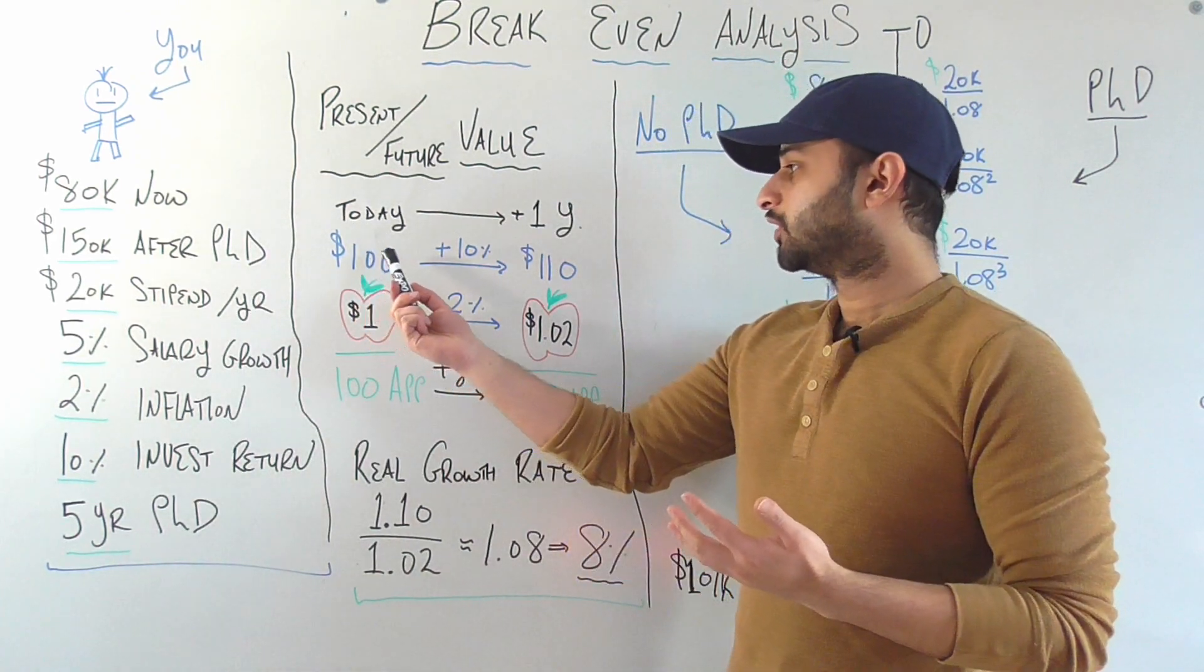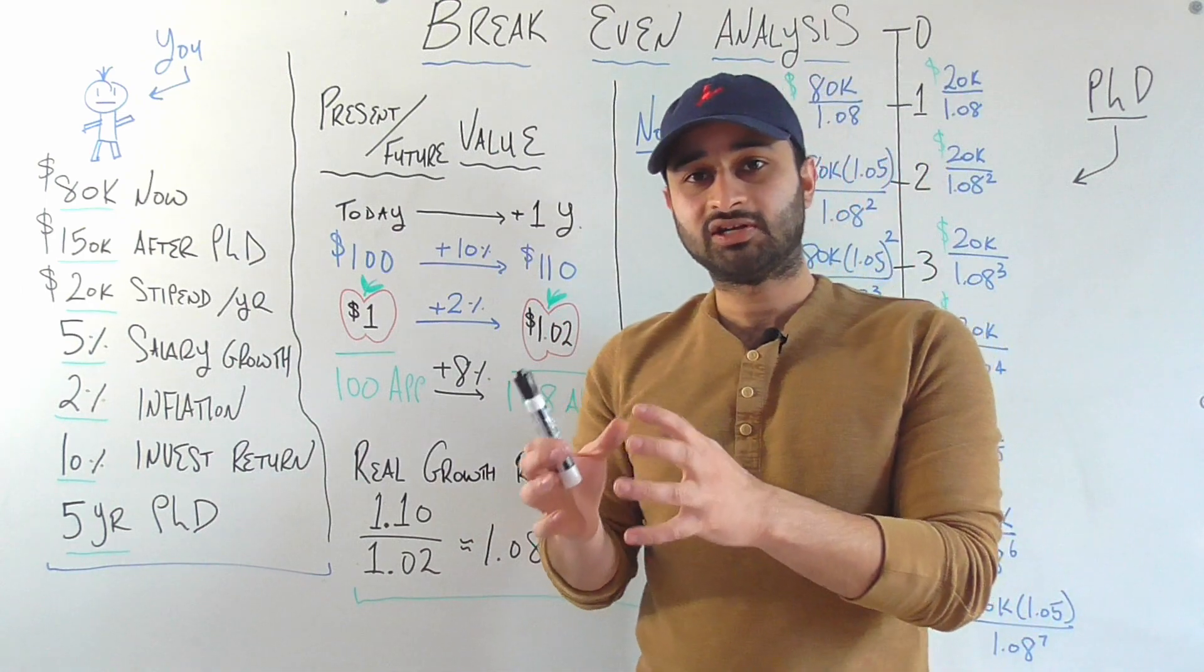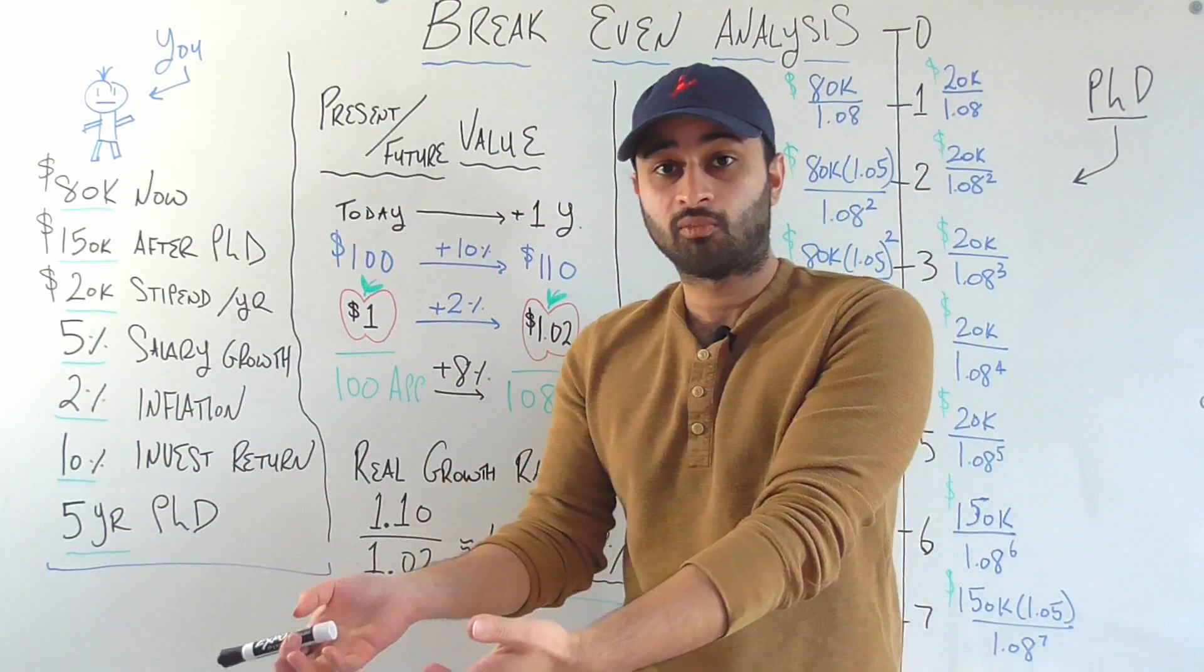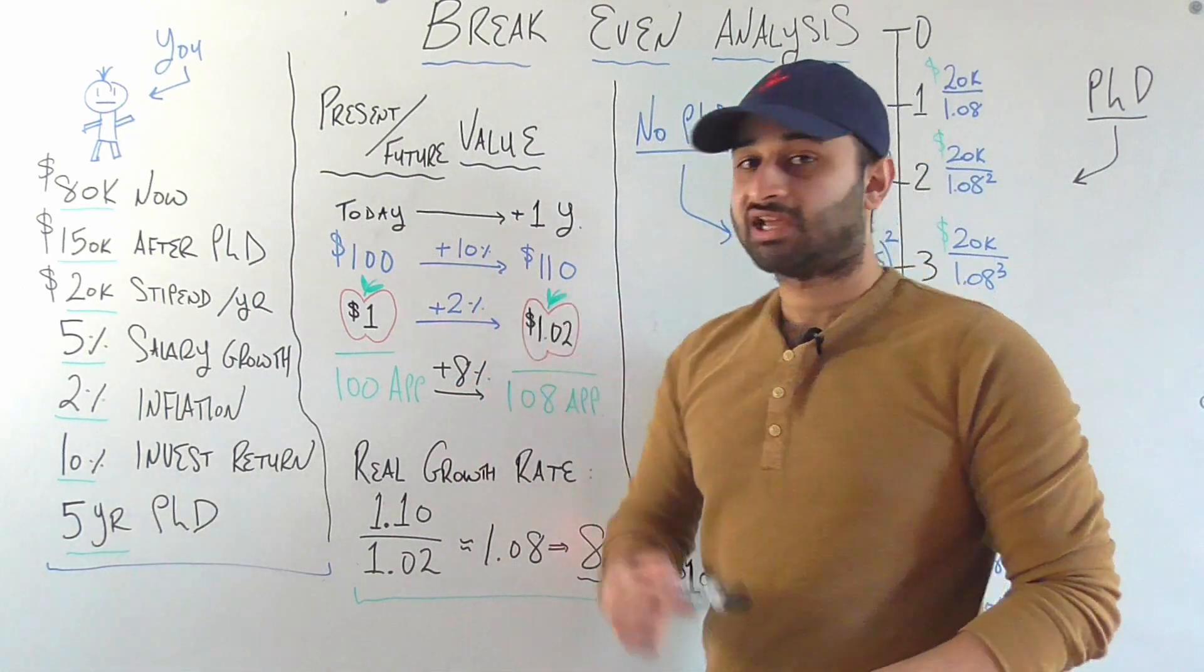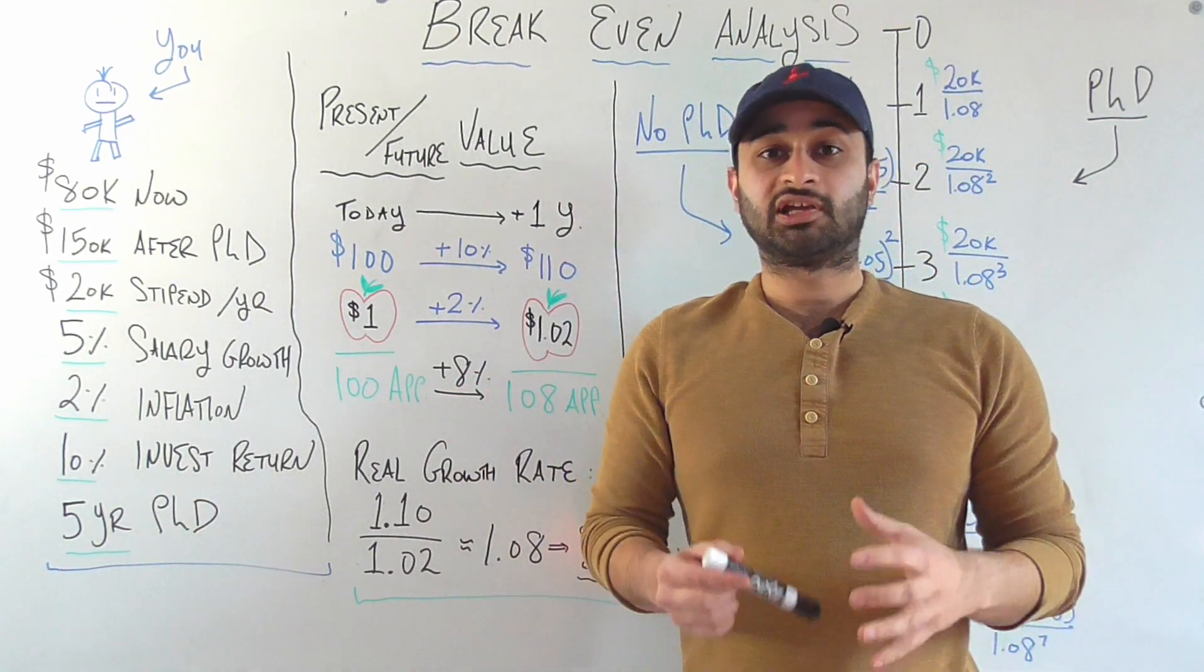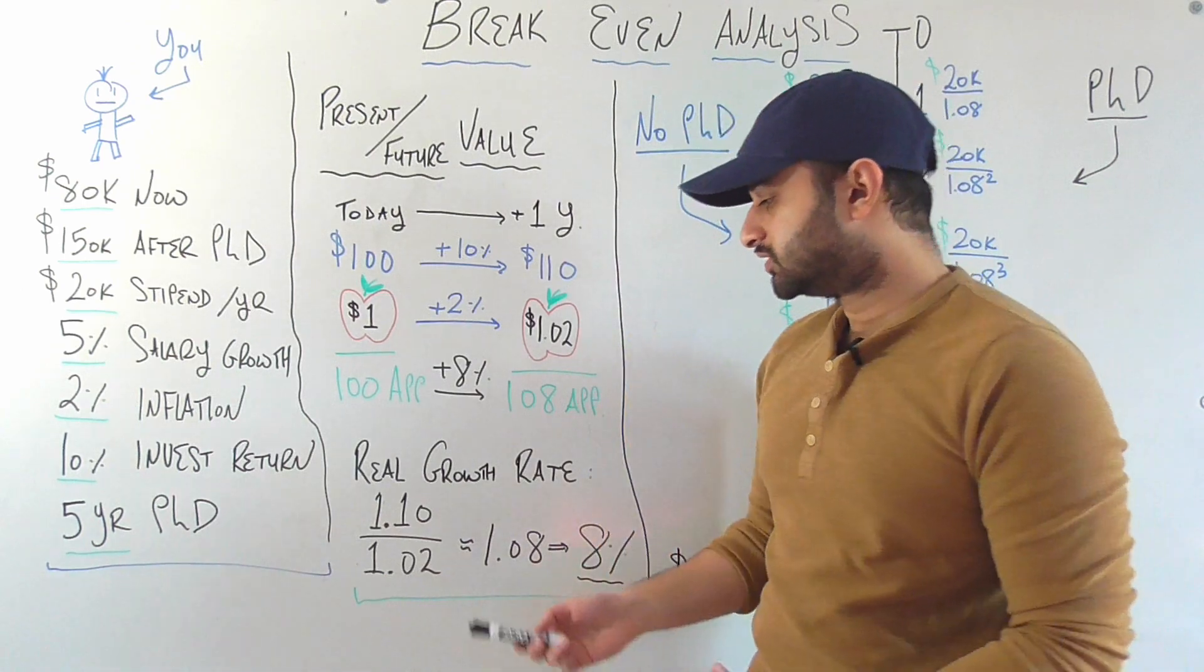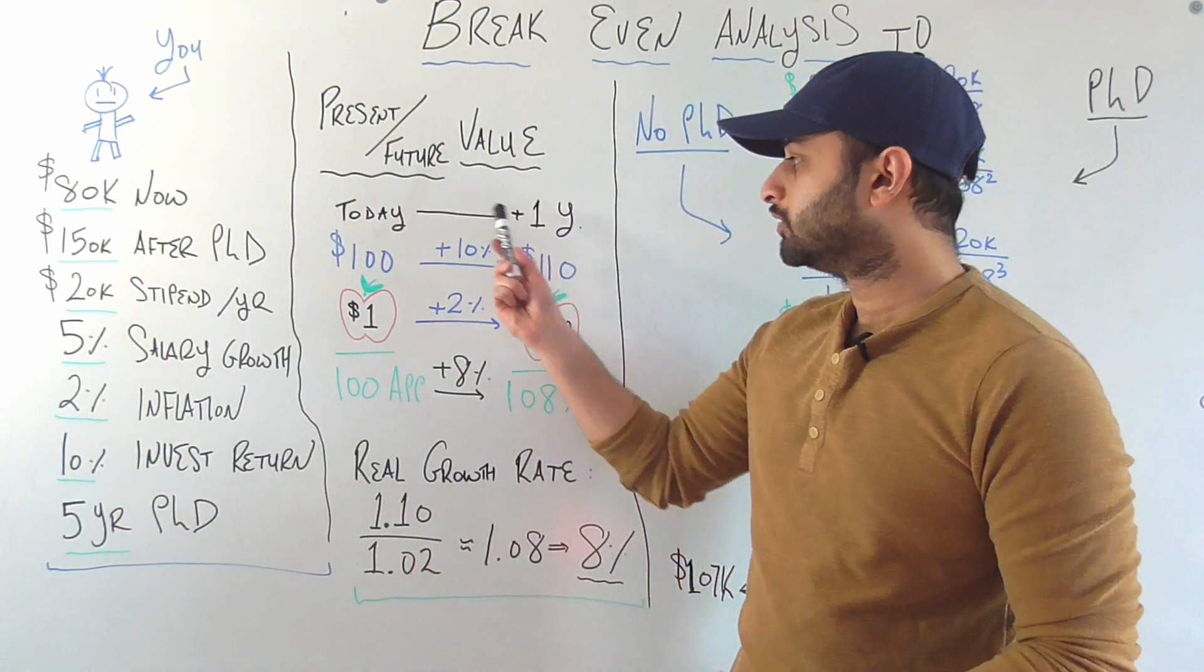So we see that although the investment you're getting is going to increase your physical money by 10% because things are also getting more expensive, that's why this 8% is lower than this 10%. And if you want an explicit formula for how we get this, you would just divide 1.1, which was your investment return, divided by 1.02, which was your inflation rate.